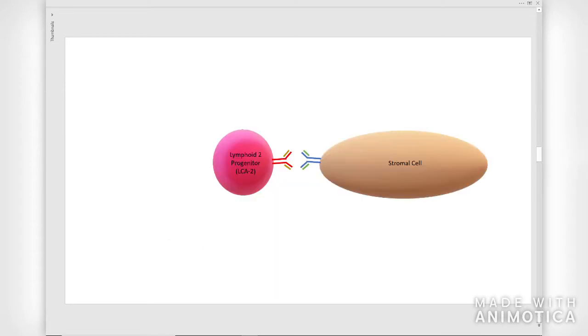Stage 2. Lymphoid progenitors receive signals from stromal cells residing in the bone marrow to induce the development of pro-B cells. These signals include VCAM that binds to VLA4, SCF that binds to CKIT, and IL7 that binds to IL7 receptor. The co-receptors IG alpha and IG beta are also observed on the cells at this stage.